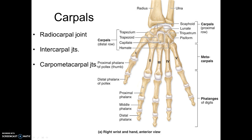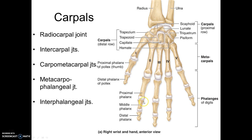For digits two through five, there is a proximal phalanx, a middle phalanx, and a distal phalanx. The articulations between the phalanges are called interphalangeal joints, and at those joints we have limited mobility — only flexion and extension.